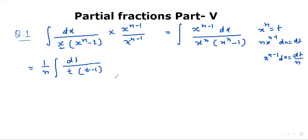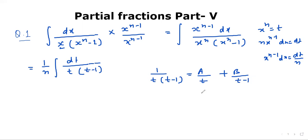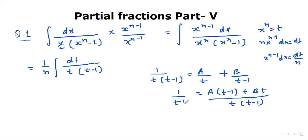We can use partial fractions. Let us write 1 upon t times t minus 1 equals a upon t plus b upon t minus 1, which gives a times t minus 1 plus b times t divided by t times t minus 1, equal to 1 upon t times t minus 1. That is, 1 equals a times t minus 1 plus b times t.